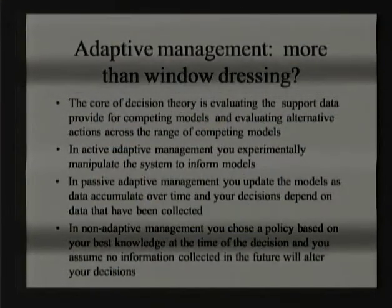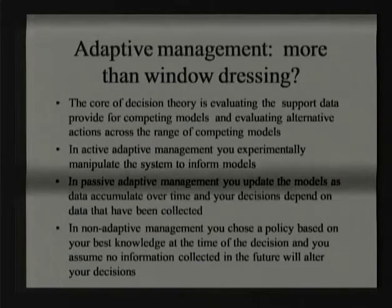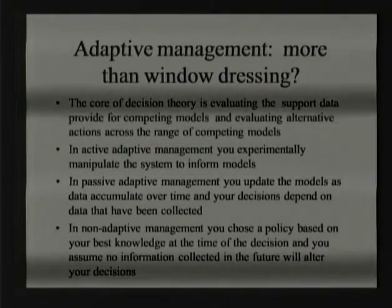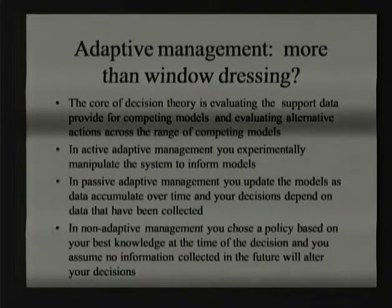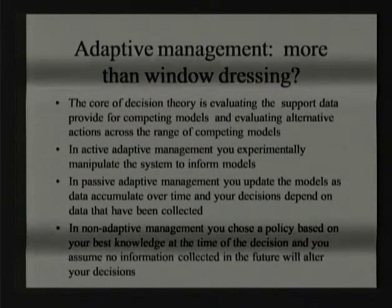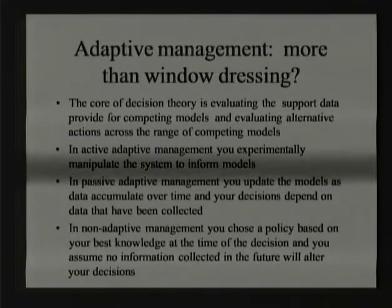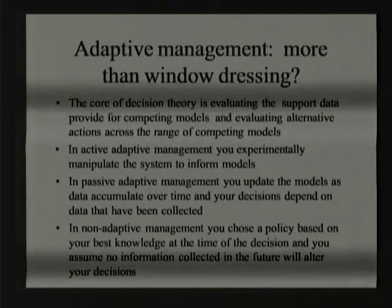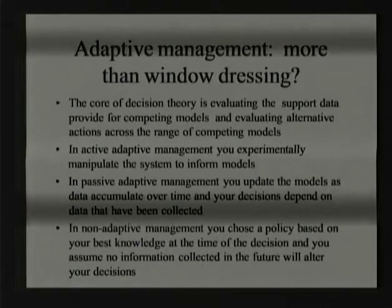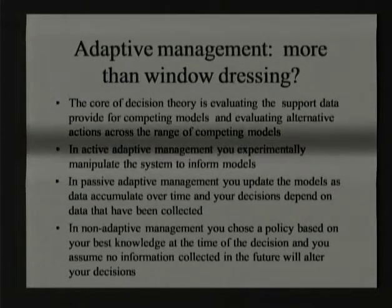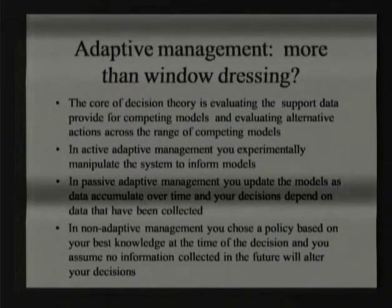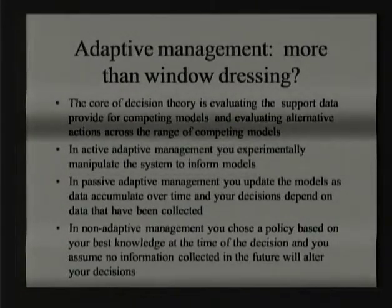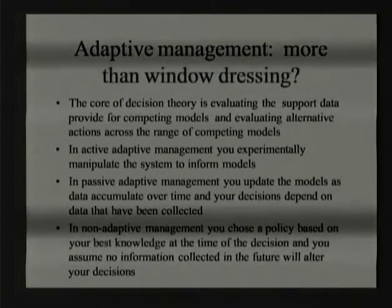Most decision making can be thought of within the concept of adaptive management, which is more or less learning by doing in many flavors. Within the broader area of decision theory, the core is always evaluating the support the data provide for competing models and evaluating alternative actions across the range of competing models. In active adaptive management, you experimentally manipulate the system to inform models. In passive adaptive management, you update the models as data accumulate. In non-adaptive management, you simply choose a policy based on your best knowledge at the time.